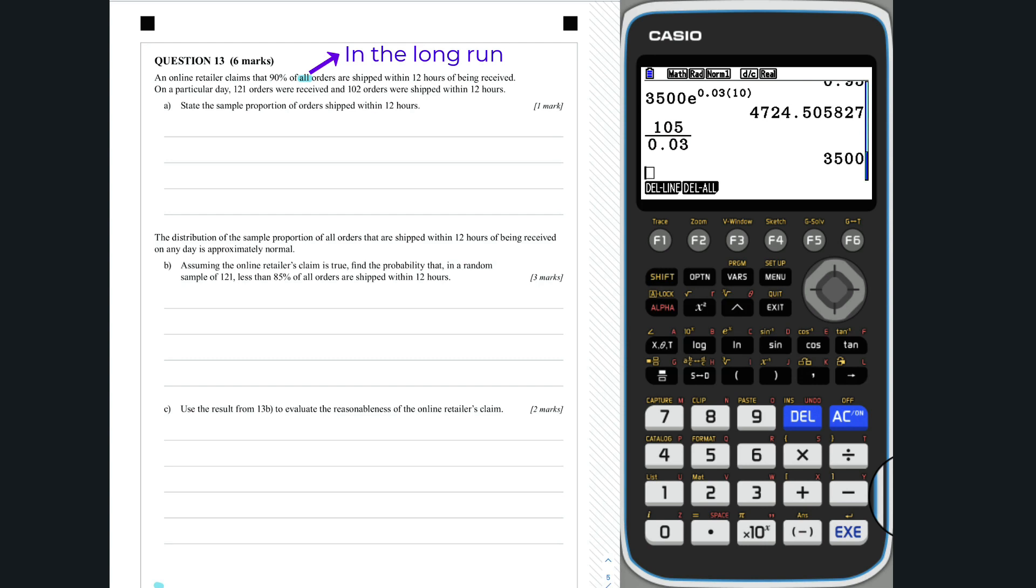But, if we were to look at just a single sample of orders, the proportion of orders shipped within 12 hours could be different to 90%.